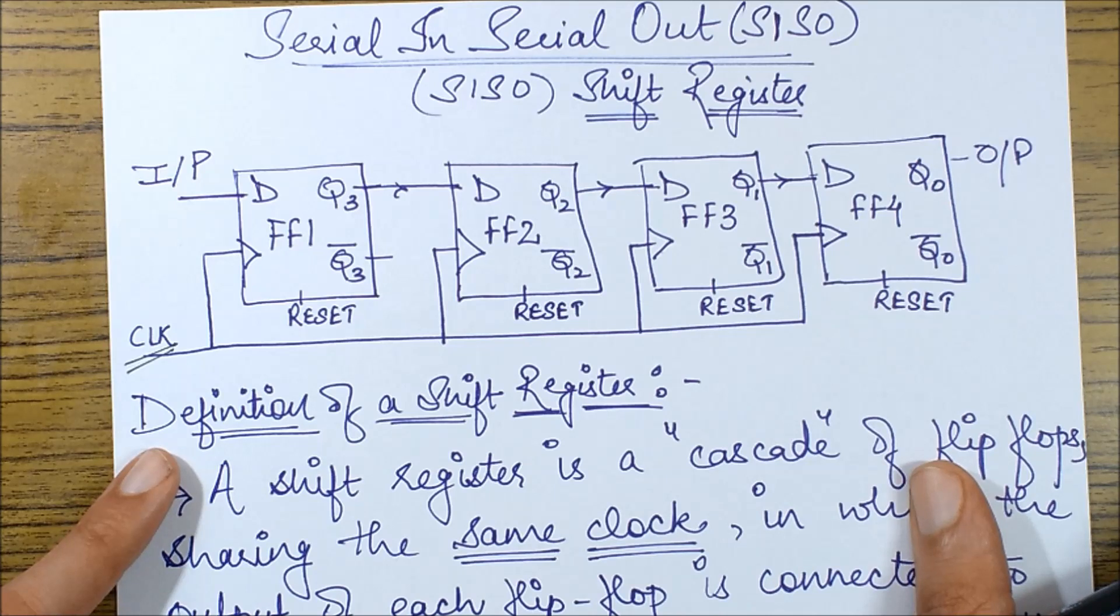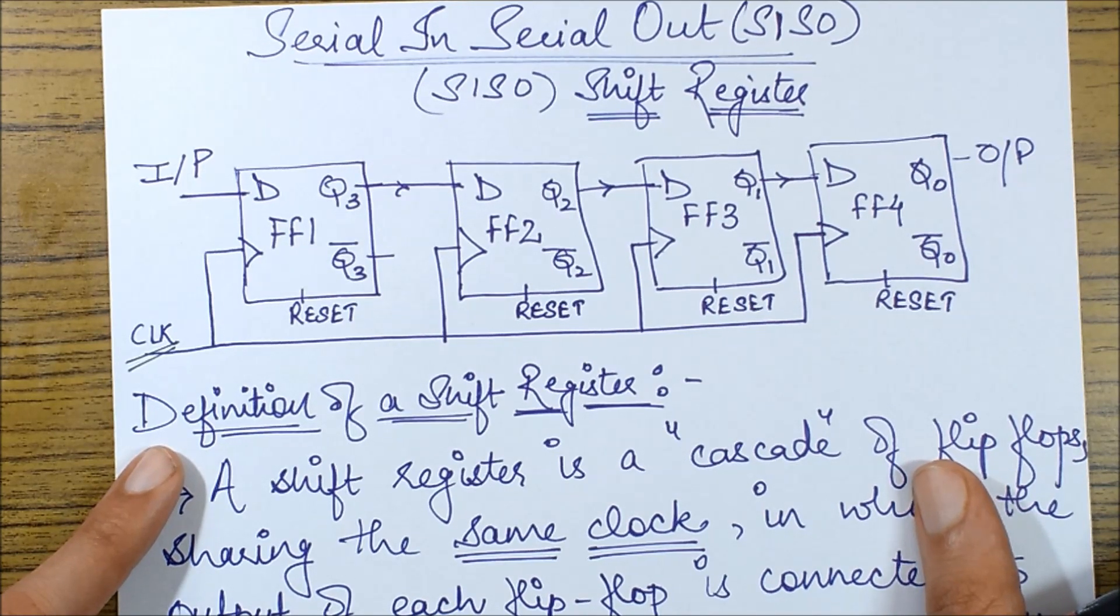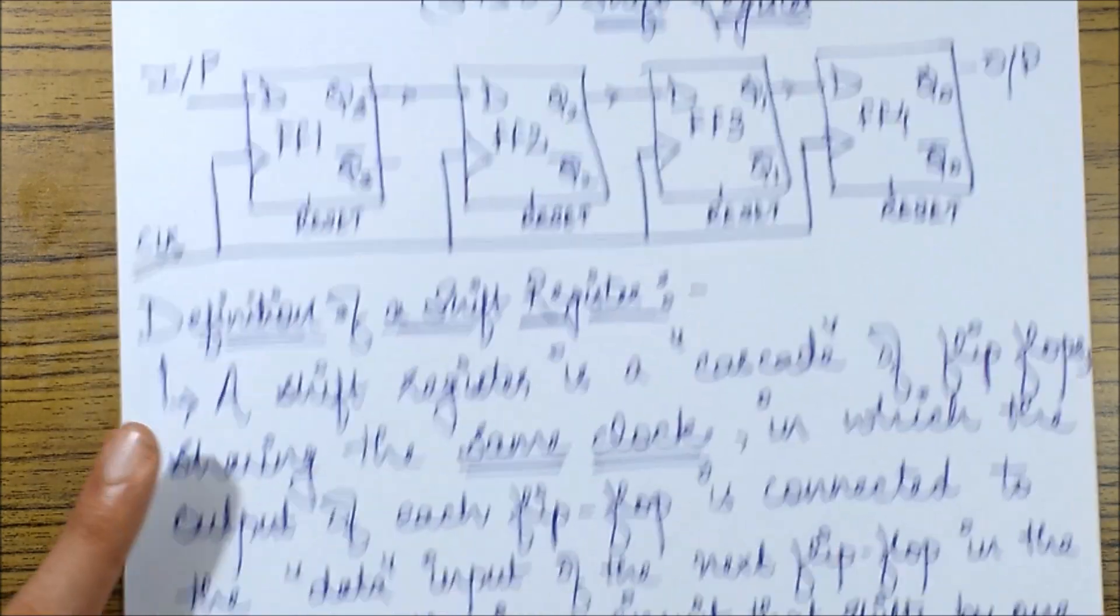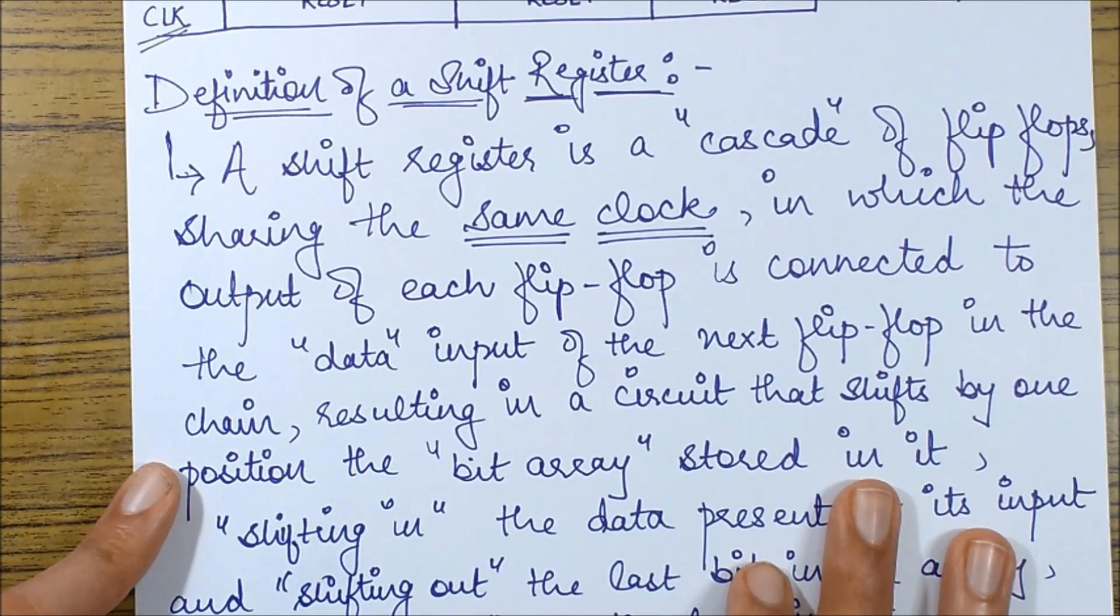So what we have done is we have taken a D flip flop, and that is also one of the purposes why we use a shift register. We use shift register to essentially also introduce some kind of delay. We are generating the same output in case of a SISO, which is serial in serial out.